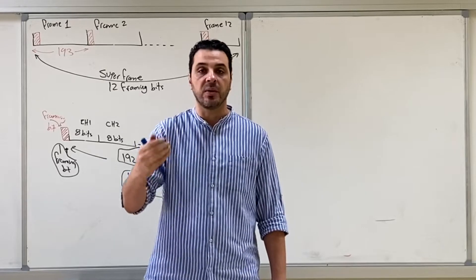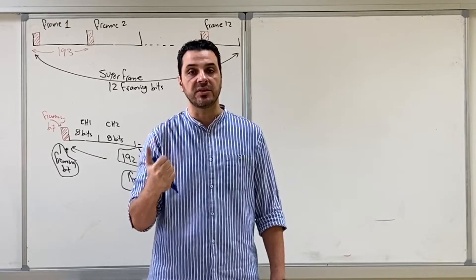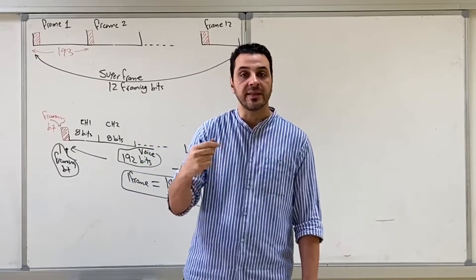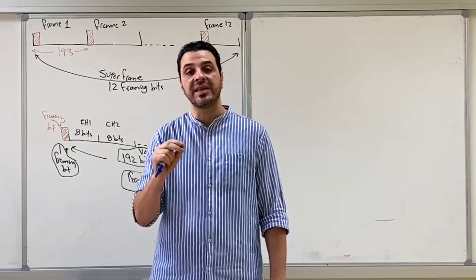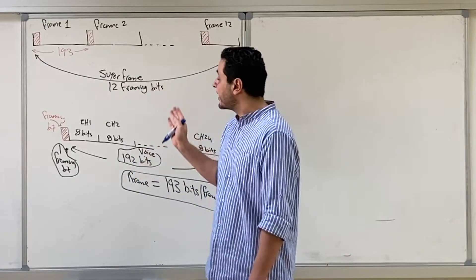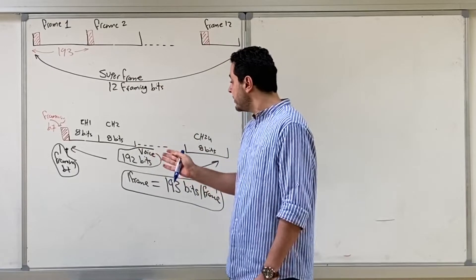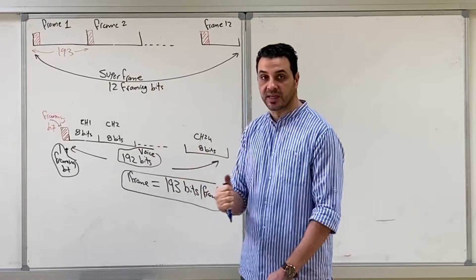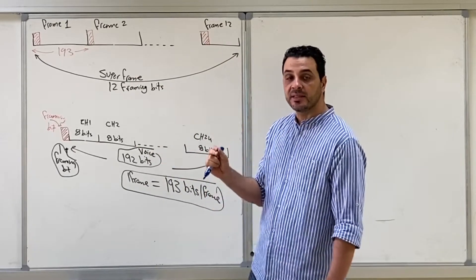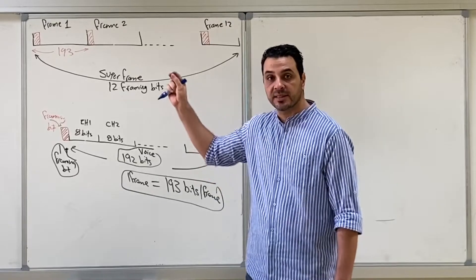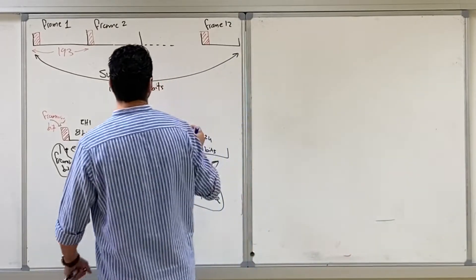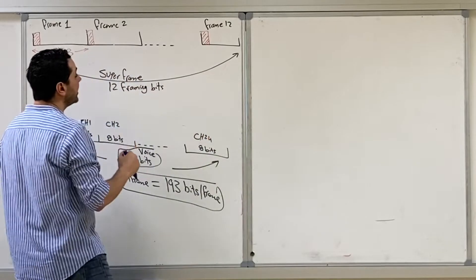For example, when you call somebody there's the ringing tone, the busy tone, on-hook, off-hook, and dialing pulses — we need some signaling bits for these. But in the T1 carrier system, there is no place for signaling bits. So what they decided in this T1 carrier standard was to introduce the concept of the super frame.